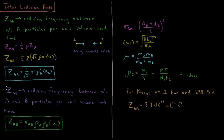We can also define the quantity ZAB. This is the collision frequency between all particles of A and B per unit volume per unit time. This time we do not have to correct for double counting, because here each species is counting towards their own. So we have sigma AB, the effective cross-sectional area, which is the mean value between the two of them, times the density of particle A times the density of particle B.